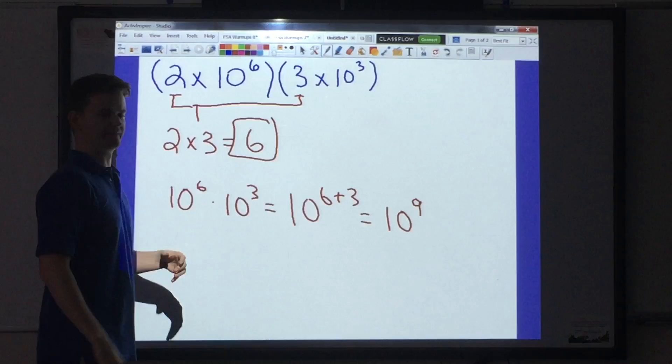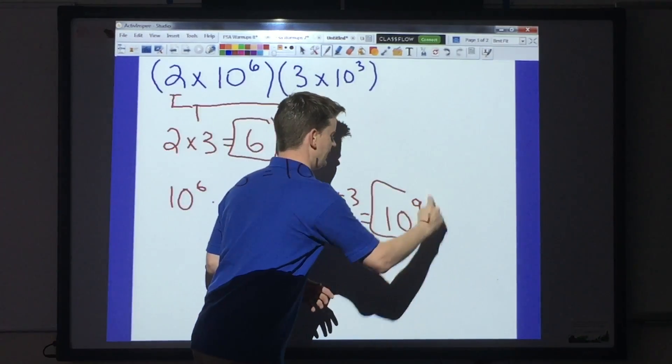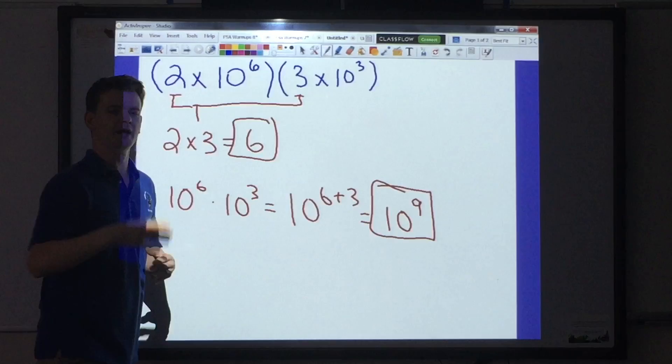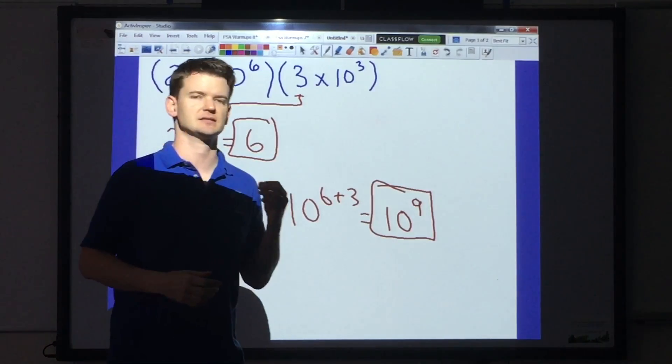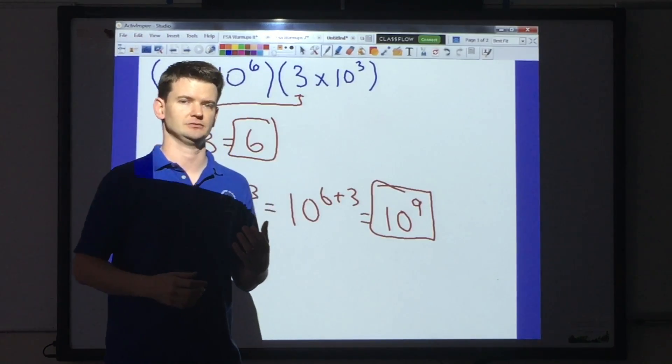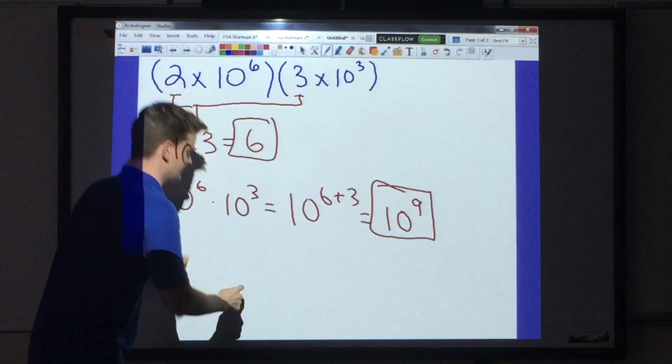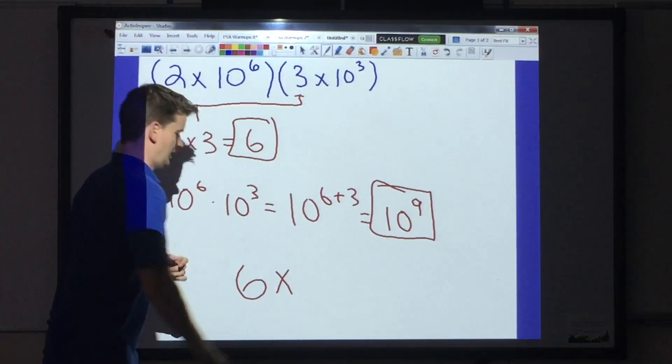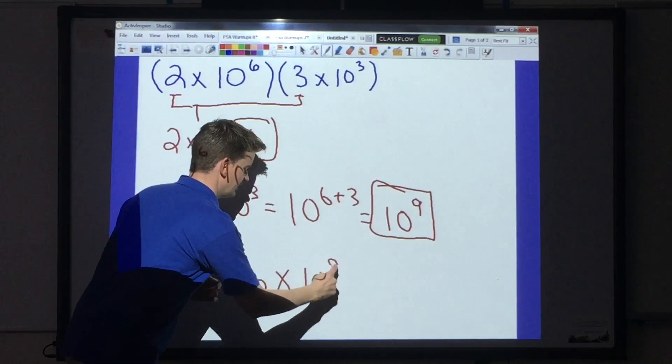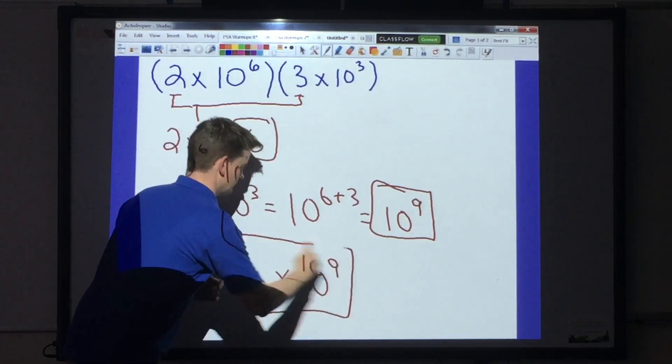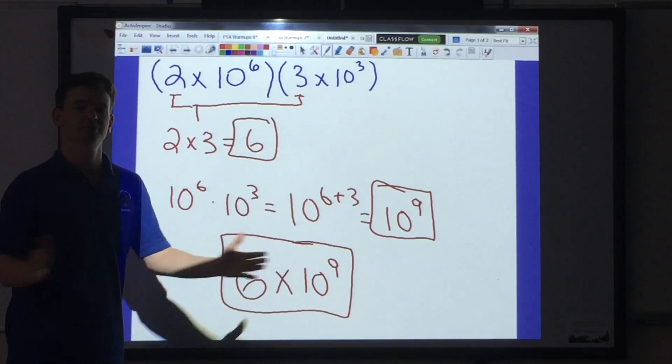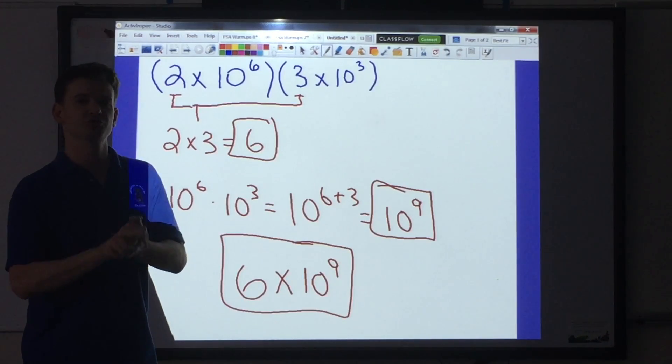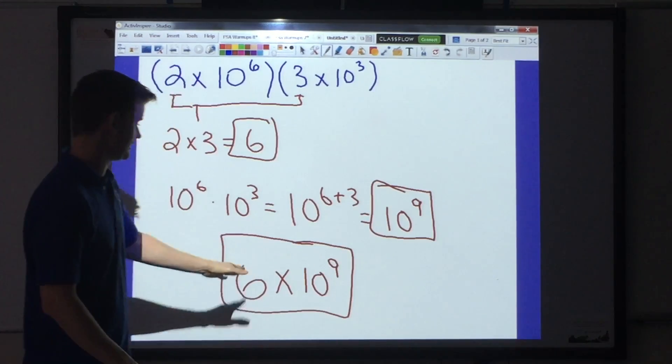So I multiplied my factor, I added the exponents for my base. Now all I have to do is write my answer in correct scientific notation. So I start with the factor, 6, I put in my multiplication sign, I put in my power of 10, and my new exponent, which is 9. And I've officially multiplied using scientific notation. Make sure that your answer is in correct scientific notation, just like this one is.